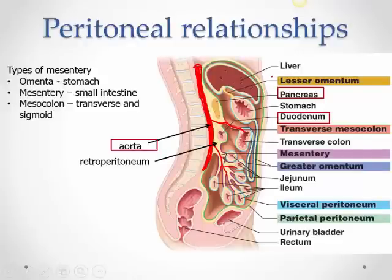In a sagittal section, the green layer represents the peritoneum lining the inside of the abdominal wall — both anterior and posterior. This is called parietal peritoneum. It then goes on to line some organs entirely, where it is called visceral peritoneum. Notice how some organs hang by mesentery.